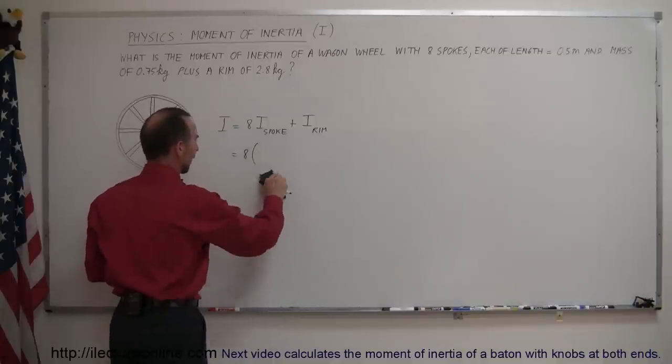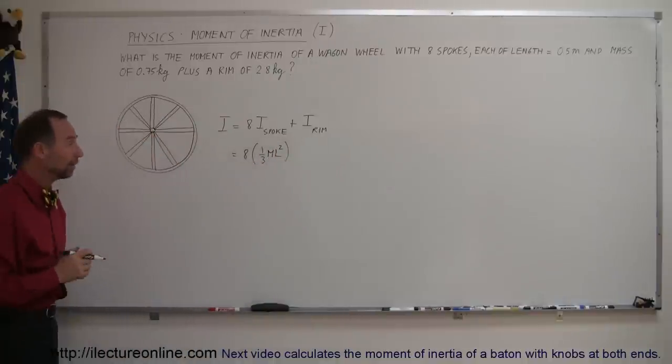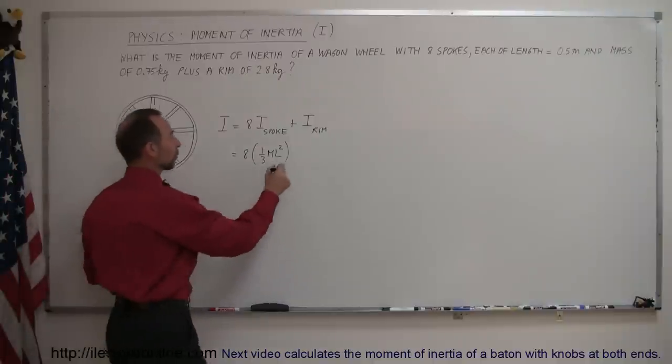Let's do this again. It's actually one-third the mass of each bar times the length of each bar squared. So eight times the moment of inertia of that plus the moment of inertia of the rim.